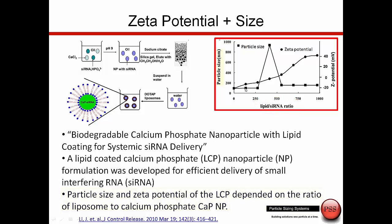Looking at particle size on the left — the square data — and zeta potential on the right, as we change the molar ratio, we see the zeta potential go from negative up to positive. It doesn't matter if the charge is negative or positive for stability — it's the magnitude of the charge that matters. So both extremes would be stable. But when the ratio reaches the point where zeta potential is essentially zero, there is aggregation and a very large increase in nanoparticle size, making it probably not as effective.